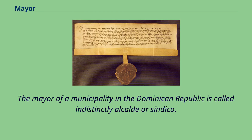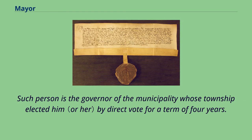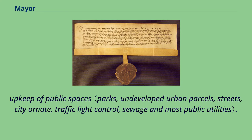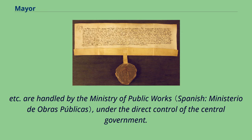The mayor of a municipality in the Dominican Republic is called indistinctly Alcalde or Síndico. The latter name is preferred to avoid confusion. Such person is the governor of the municipality, elected by direct vote for a term of four years. The daily duties of the mayor's office are restricted to local governance, responsible for the coordination of waste collection and upkeep of public spaces. In practice, most duties are centered on minor street repairs; new or large road projects like overpasses, bridges, and pedestrian crossings are handled by the Ministry of Public Works under the direct control of the central government.